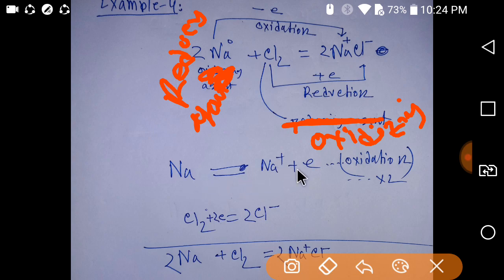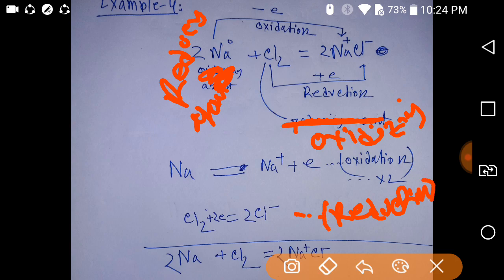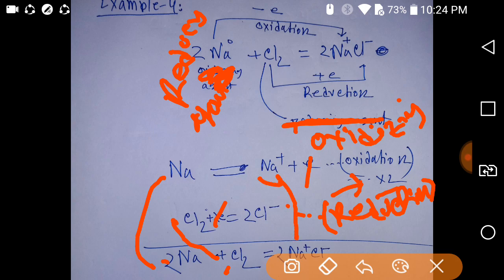Sodium is the reducing agent and since an electron is lost this is an oxidation process. Chlorine takes two electrons — this is a reduction process. To balance the electrons, multiply the sodium equation by two: two electrons cancel, you get two sodium atoms and one chlorine molecule giving two molecules of sodium chloride. Thank you for viewing this video.